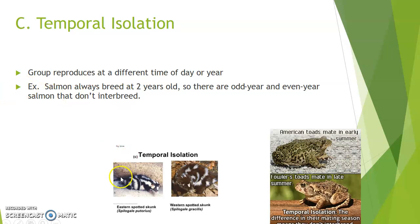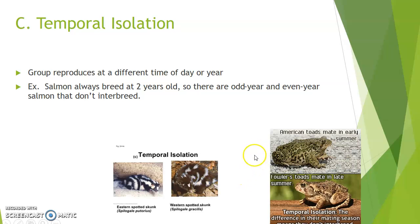The same thing applies with skunks: the eastern spotted skunk versus the western spotted skunk. One has babies in the spring and the other in the fall. If they're not reproductively active at the same time, it won't line up and they won't find each other as attractive mates. With frogs, American toads mate in early summer while Fowler's toads mate in late summer — and that's enough to keep them as separate groups.